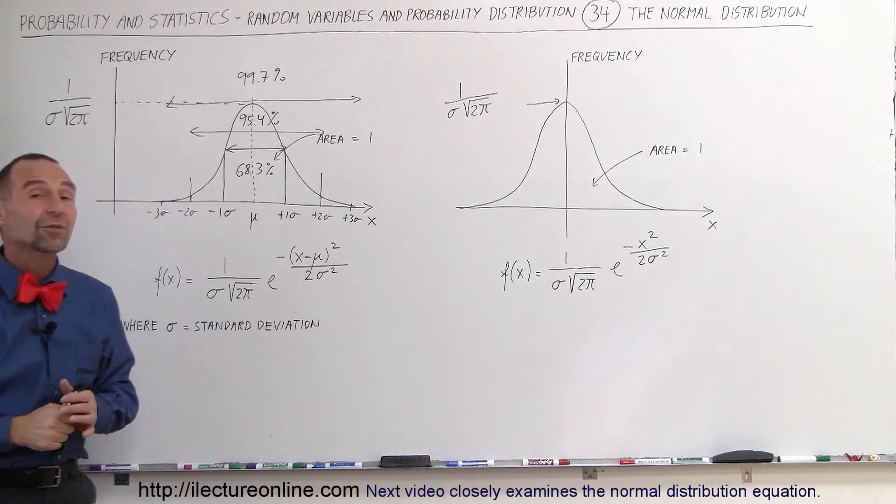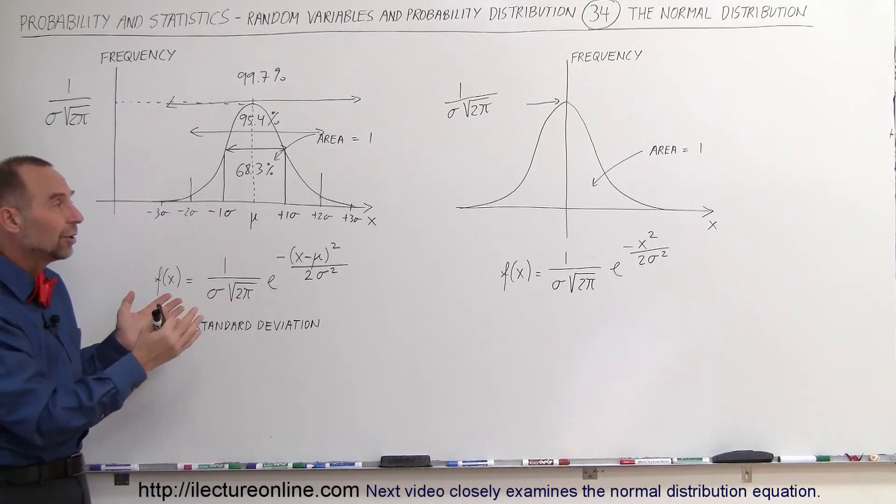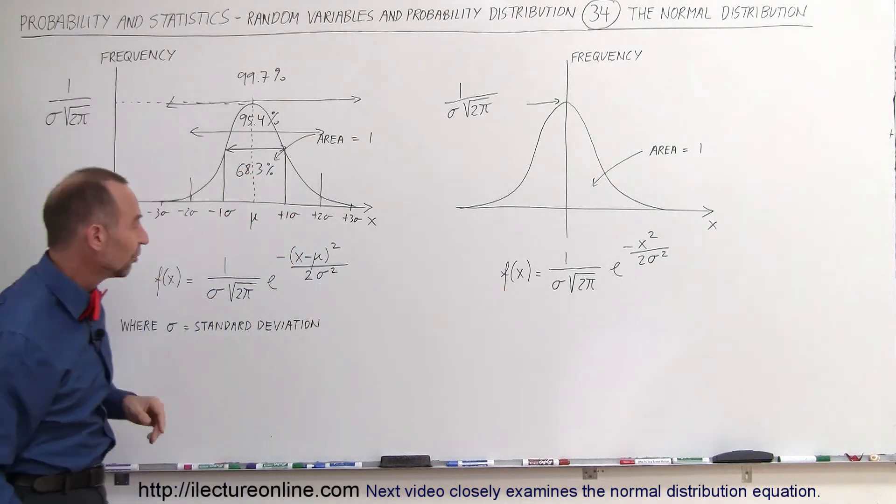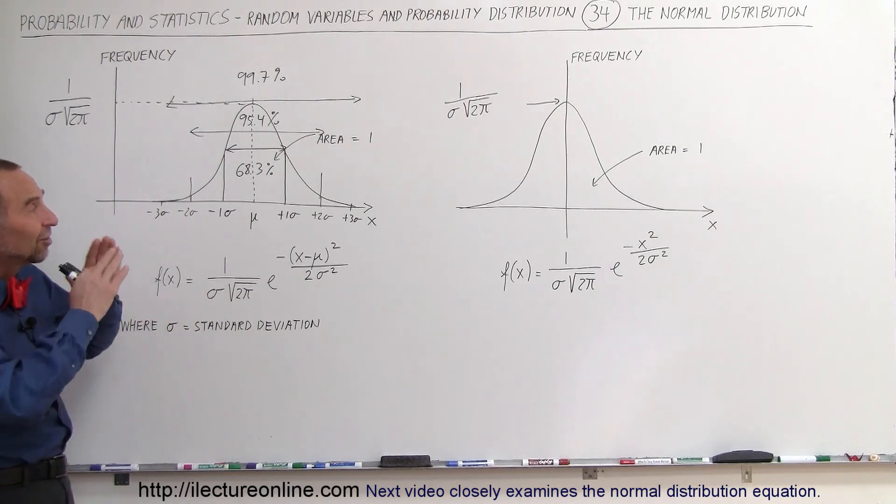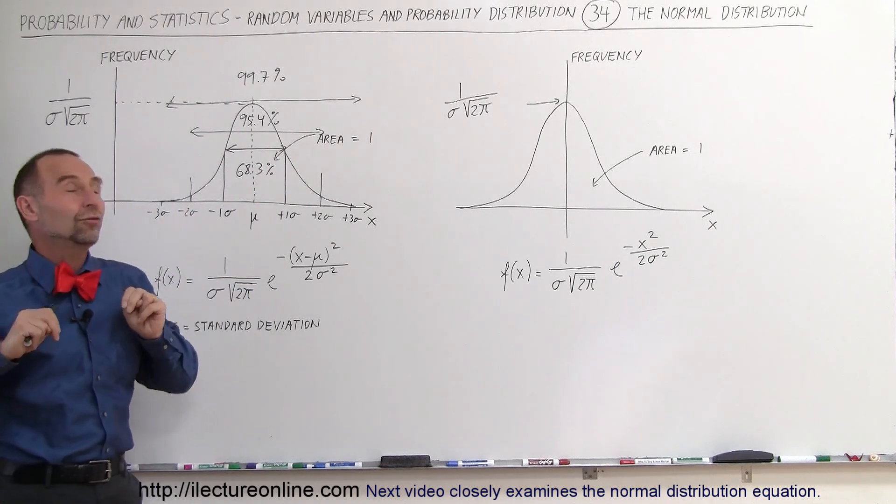What I simply wanted to do here is give you a feel for what these curves look like. What the equations are that drive these curves. Of course, understand that sigma is equal to standard deviation. And simply indicating that the area underneath the curve is now set equal to 1. That's what we call a normalized curve. That's what we call a normal distribution.